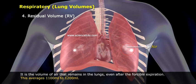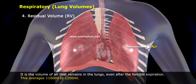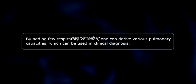4. Residual volume (RV): It is the volume of air that remains in the lungs even after forcible expiration. This averages 1,100 ml to 1,200 ml. By adding a few respiratory volumes, one can derive various pulmonary capacities which can be used in clinical diagnosis.